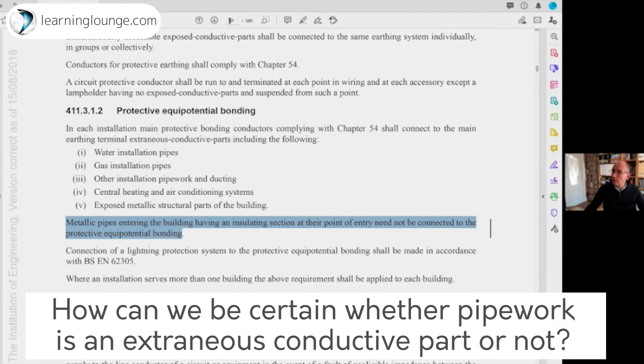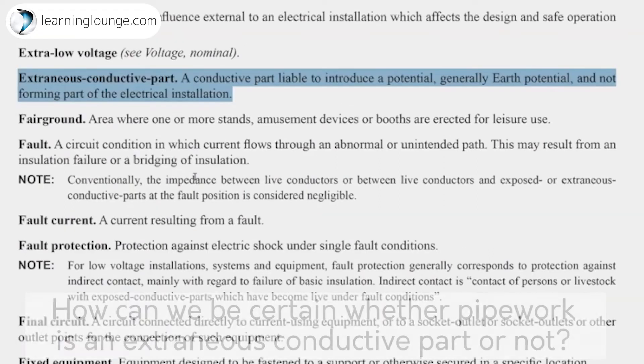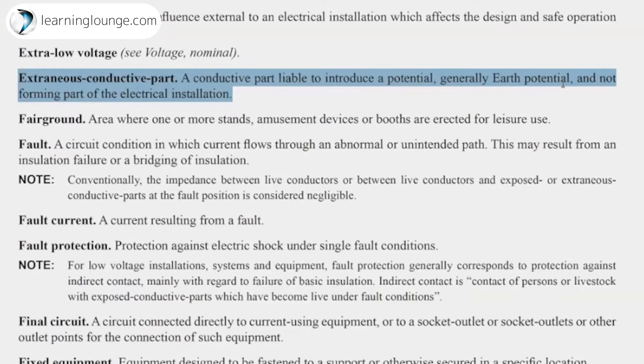The question would be how do we absolutely be certain that something is or isn't an extraneous conductive part, because that can be the exception. I'm going to take it to the next regulation to cover that, here in part two. It is a conductive part liable to introduce a potential, and that is generally earth potential, and it is not forming part of the electrical installation. So this could be a metallic pipe or a ducting from the outside. It could be steelwork coming out of the ground for a large building. If there were to be a fault and the part became live and you touch that metalwork, you would get an electric shock, so we need to bond that.